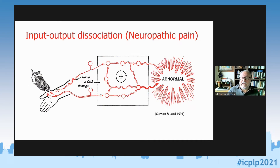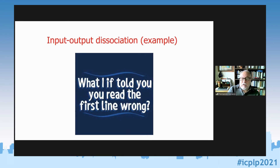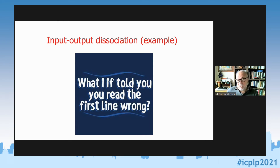Let me use examples from the visual system to illustrate input-output dissociation. If you read the first line of this text, you read it wrong — the first line actually says 'What if I i told' but nobody reads it that way. Your retina sends the brain a perfectly accurate stimulus showing the extra word, and the brain refuses to accept it, reading only what makes sense. This is a simple example of an input-output dissociation.